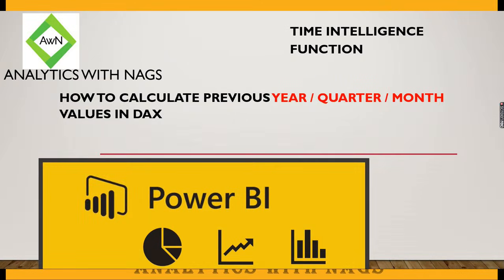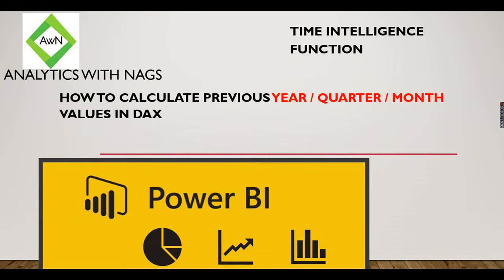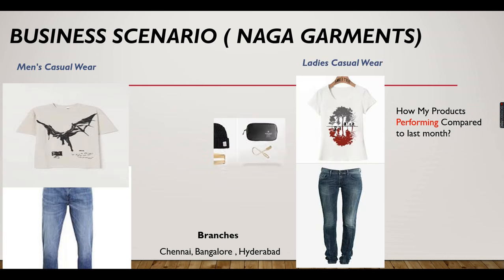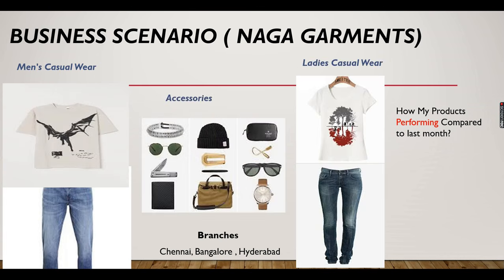We are exploring Power BI using a business scenario — Naga Garments. Today for this business we are going to identify how products are performing compared to last month, meaning how much sales happened compared to last month, and what percentage increase or decrease in sales occurred. That is what we are going to see using DAX functions.